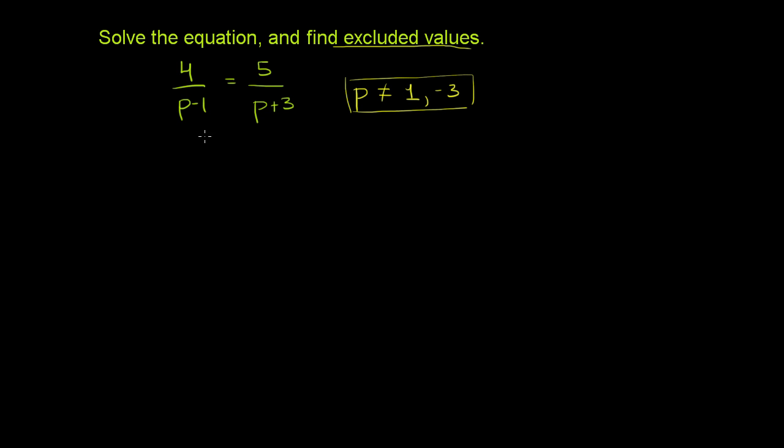So now let's try to solve this equation. I'm going to rewrite it over here. So you have 4 over p minus 1 is equal to 5 over p plus 3. The first thing we can do, especially because we can assume now that neither of these expressions are 0, and this is going to be defined since we've excluded these values of p.